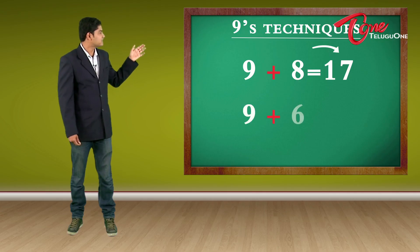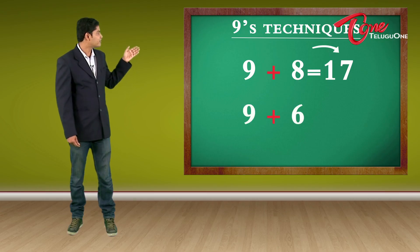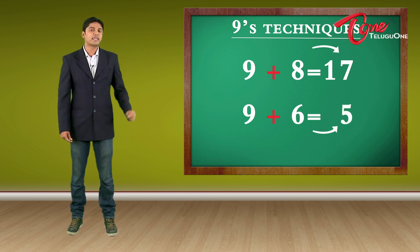9 plus 6 is another example. So the number before 6 is 5. So my answer is 15. Now before we go to 8's technique, let us play a small game called odd or even.